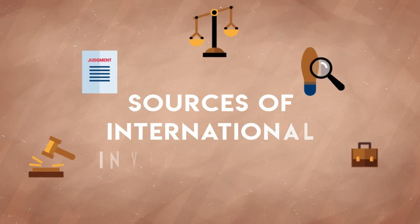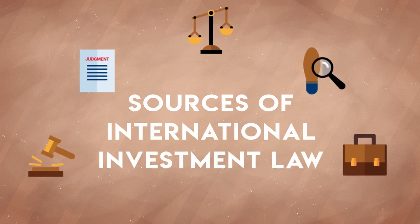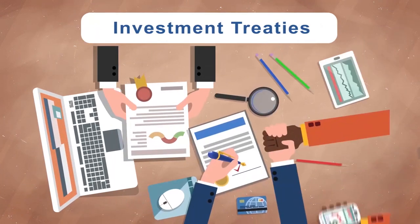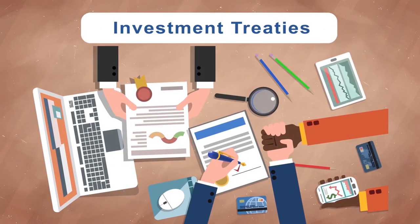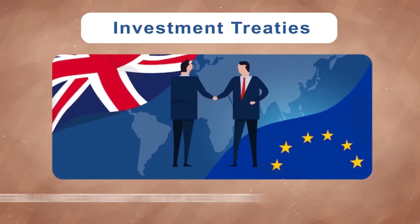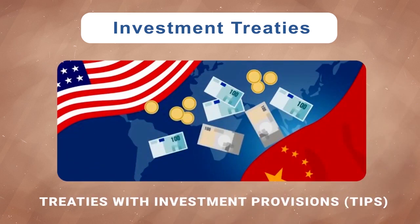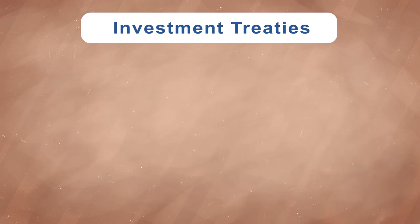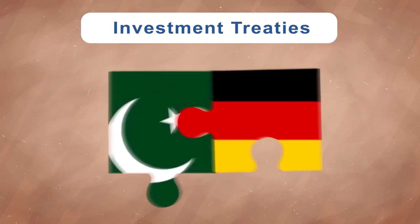Sources of International Investment Law: Investment Treaties. According to the 2019 World Investment Report, there are 2,932 BITs and 385 TIPs. The first BIT was concluded between Germany and Pakistan in 1959 to provide protection of foreign investment.